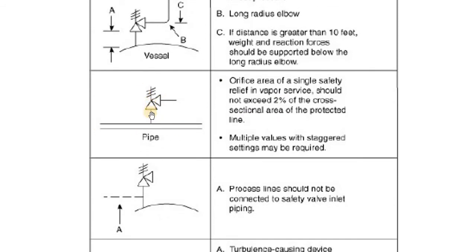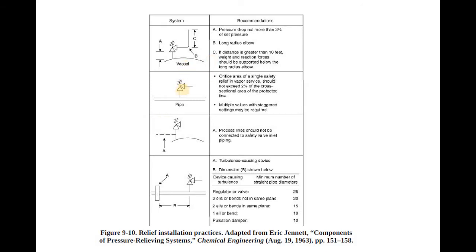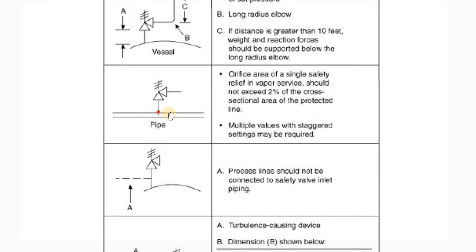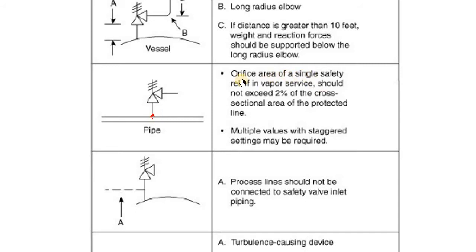If you have a pipeline with a single safety relief on a vapor surface, the orifice area of the safety relief should not exceed 2% of the cross-sectional area of the protected line. If it exceeds this, the valve may open and never close because there is always flow in that pipe driving pressure out continuously.